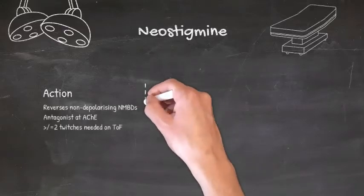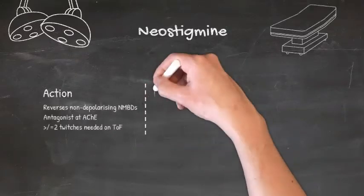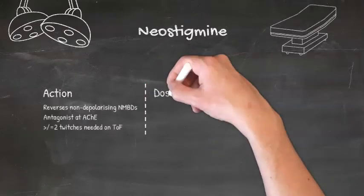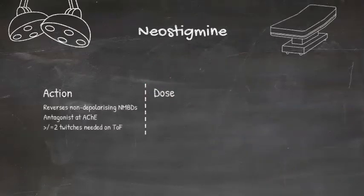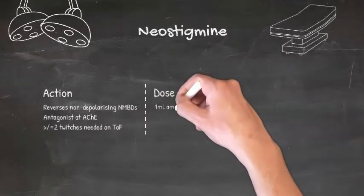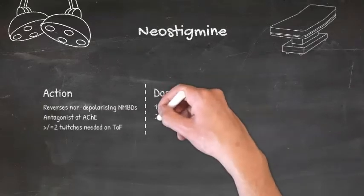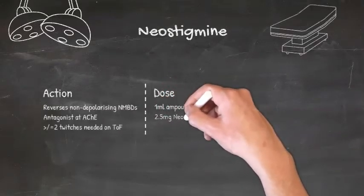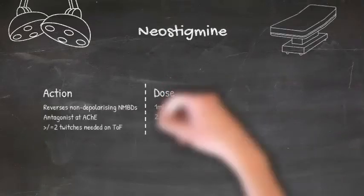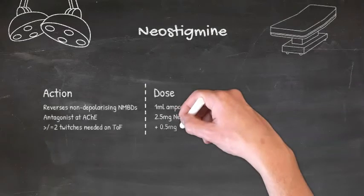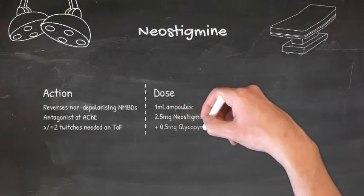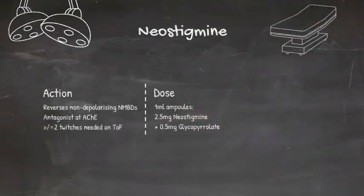Because of neostigmine's mechanism that we've just discussed, it's only of use in partial neuromuscular blockade. So if the patient does not have at least two twitches on a train-of-four stimulus, neostigmine will not be sufficient to adequately reverse the block.